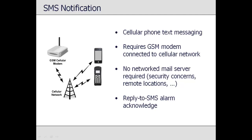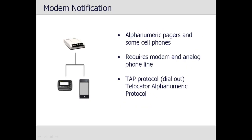Although many users can send email notification messages that will be received as text messages by cellular recipients, Top View also supports sending SMS text messages directly on a cellular network using a GSM cellular modem. This is useful when the cellular carrier does not provide an email-to-SMS gateway or where a mail server is not available due to network security or topology. Modem notification delivers a message using a modem and phone line by calling into a paging company or cellular provider using the TAP protocol, allowing another method for SMS text delivery when email and SMS notification cannot be used.